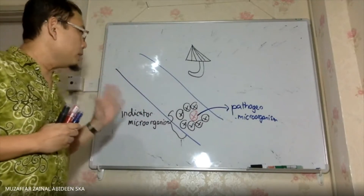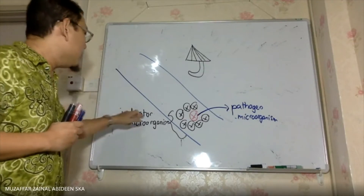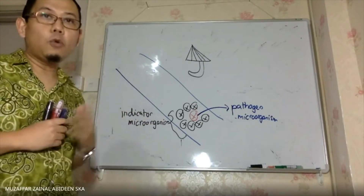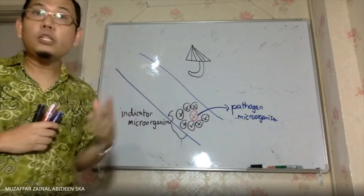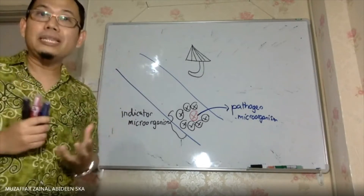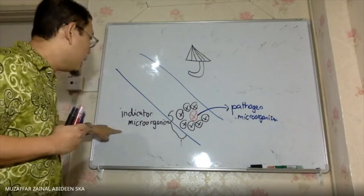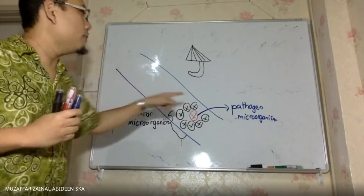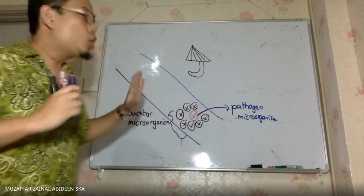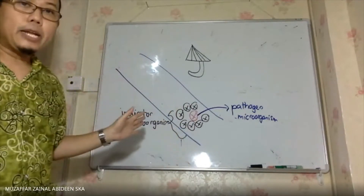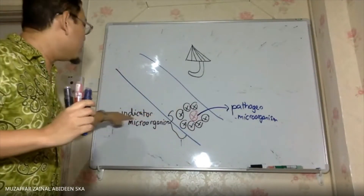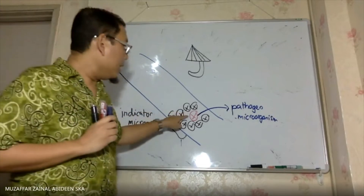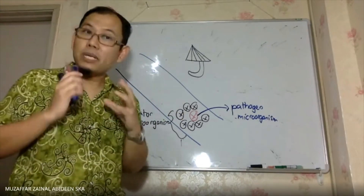Why is it important for you to determine the indicator microorganism? If you want to check the quality of the water, you take a water sample and bring it to the lab. If you find that the water contains indicator microorganisms, that means the river or the water will also be having pathogen microorganisms. If the water is clean with no pathogens at all, you will not see any indicator microorganisms.